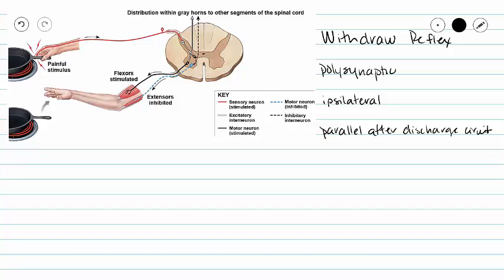This action is more complicated than a simple knee jerk, so it requires more neurons and is therefore polysynaptic.